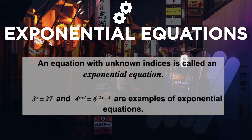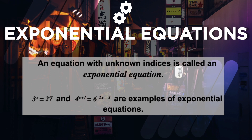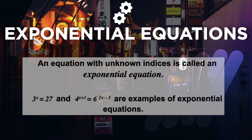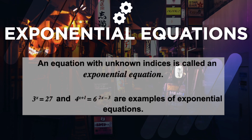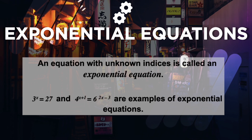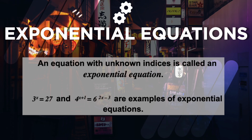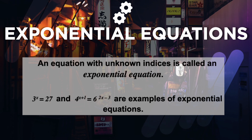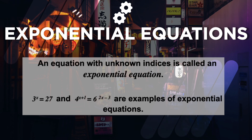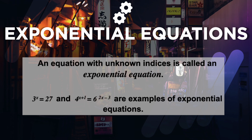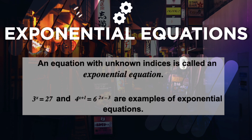An exponential equation is an equation with unknown indices. For example, 3 raised to x equals 27, and 4 raised to x plus 1 equals 6 raised to 2x minus 3. Specifically, 3^x = 27 is a one-sided exponential equation, while 4^(x+1) = 6^(2x-3) is a two-sided exponential equation. The way you solve one-sided is somehow different from two-sided.